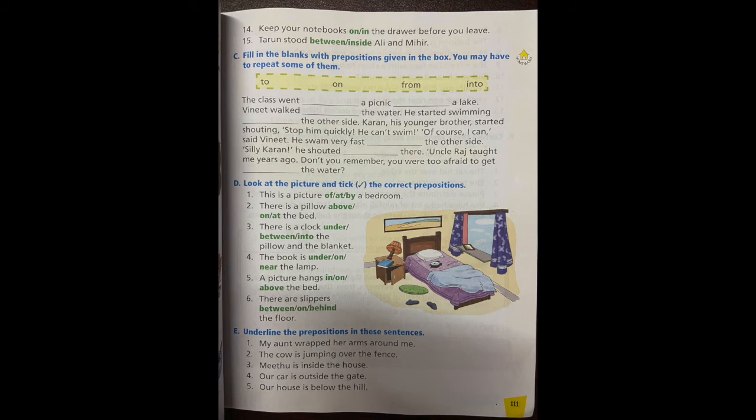Number four: the book is dash the lamp. The book is near the lamp. It is not under nor it is on. Right? A picture hangs dash the bed. Picture hangs above the bed. It is not on the bed, it is not in the bed, it is above.